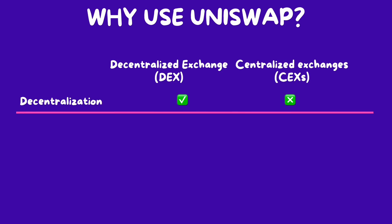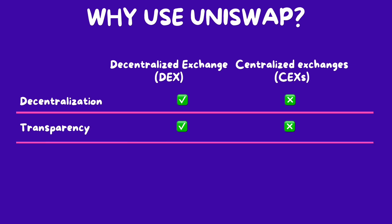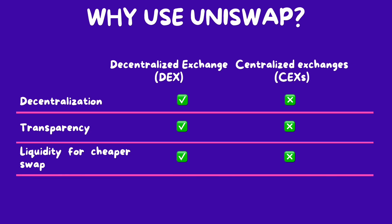First, decentralization. Unlike centralized entities that operate CEX, the Uniswap protocol operates on a decentralized network with no single entity controlling the exchange. Second, transparency. DEX are more transparent than other exchanges. Not only is all the code open source, but the Uniswap protocol operates on public blockchains where all transactions and smart contract interactions are recorded on the transparent ledger.